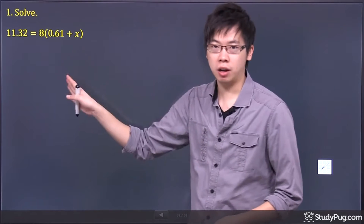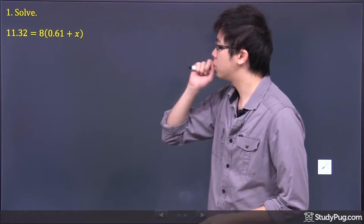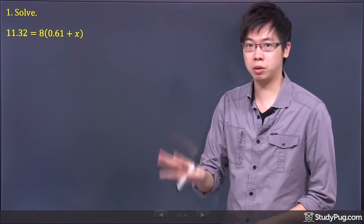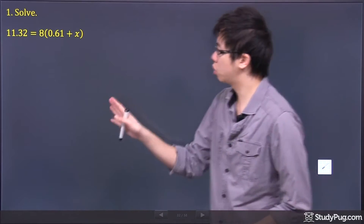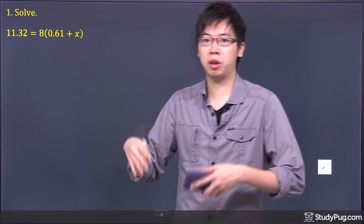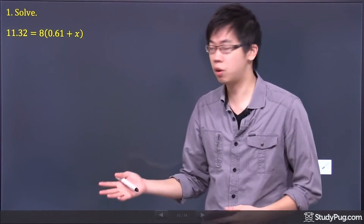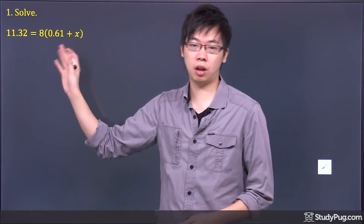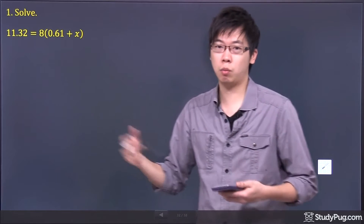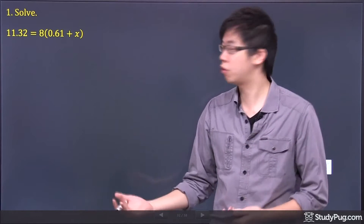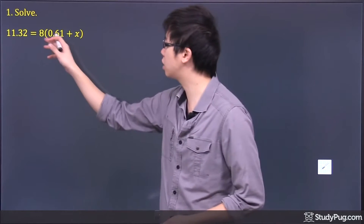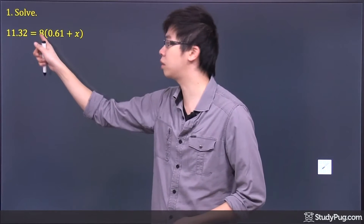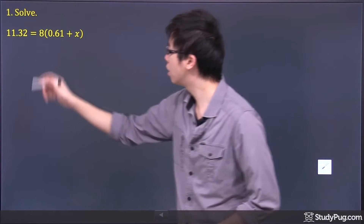We have a bracket now. Remember, if you're trying to solve for x, at the end it has to be by itself. So you're trying to remove the things around it first. The 8 is further away from the x, so that's something you might want to get rid of first, because you can't touch the inside unless you remove the something that's on the outside first.